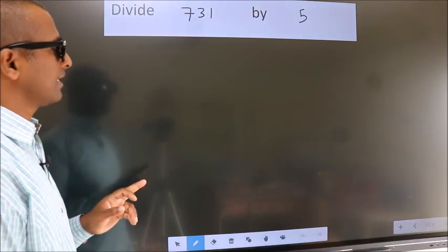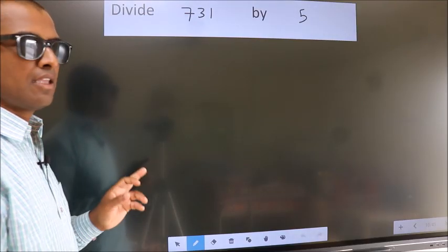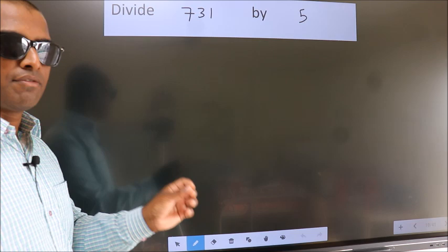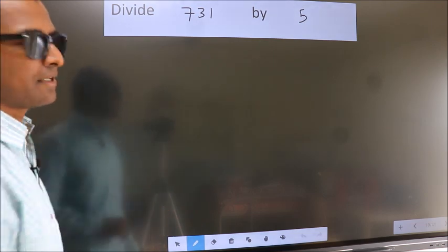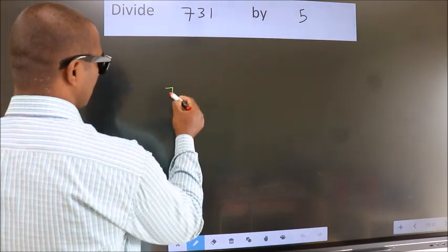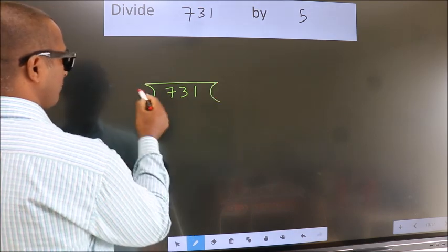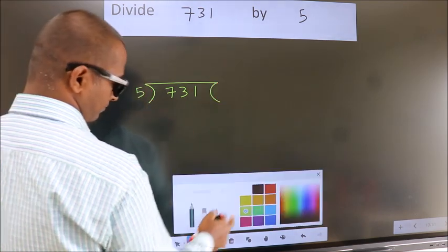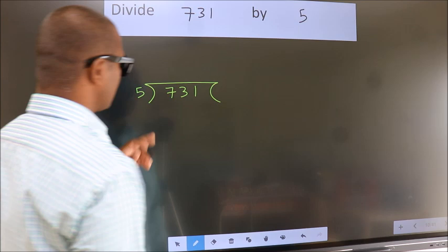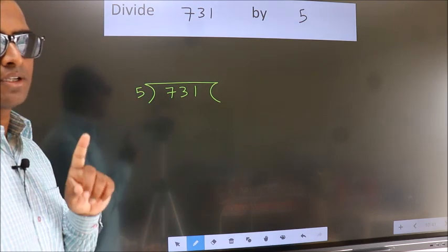Divide 731 by 5. To do this division, we should frame it in this way. 731 here, 5 here. This is your step 1.